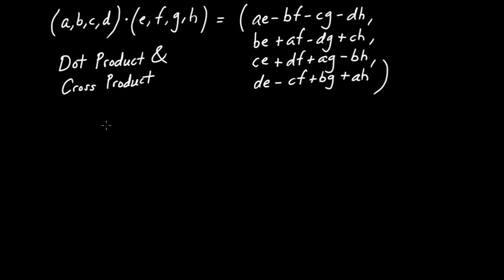It may surprise you, however, to learn that the dot product and cross product really came from not operations upon three-dimensional vectors, but quaternionic multiplication — the quaternions being a four-dimensional mathematical object. In this video, I'd like to show you how the dot product and the cross product connect to the multiplication of quaternions.